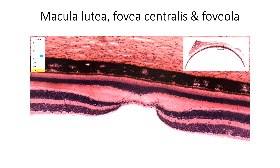At the fovea centralis and its central foveola, only the outer five layers of retina are present — the inner five layers are pushed aside. The photoreceptor cells here are exclusively cones. This area is devoid of any retinal blood vessel, which makes it easier to identify with an ophthalmoscope. The surrounding macula shows all ten layers of retina, with rods beginning to appear at its periphery. A distinct feature of the macular region is that ganglion cells are about eight to ten cells deep, as against the single layer of ganglion cells found elsewhere.